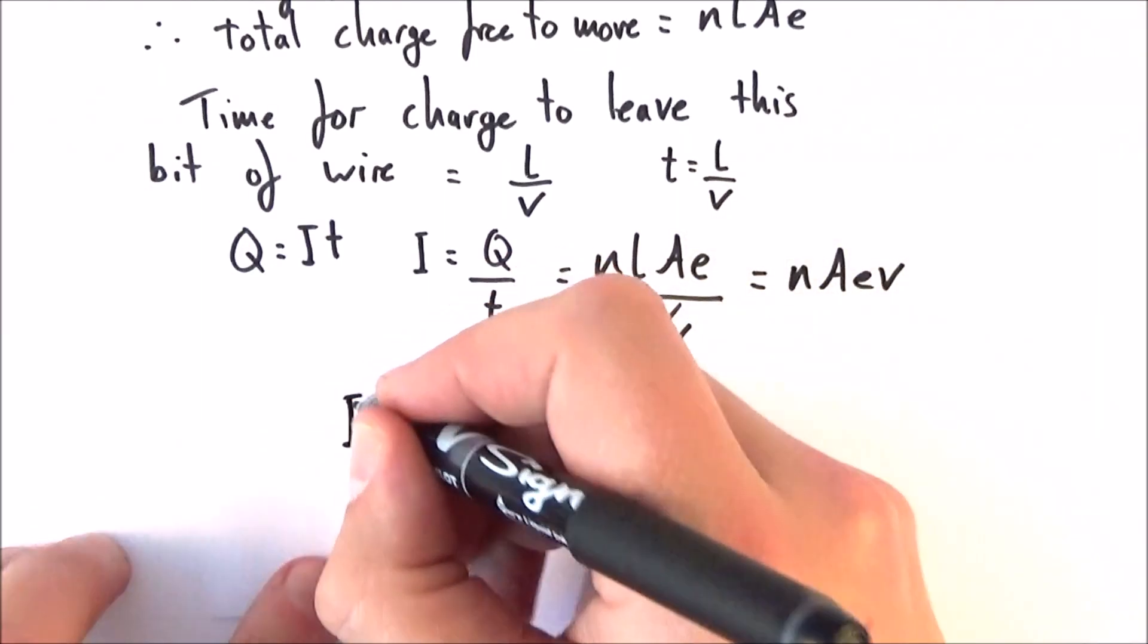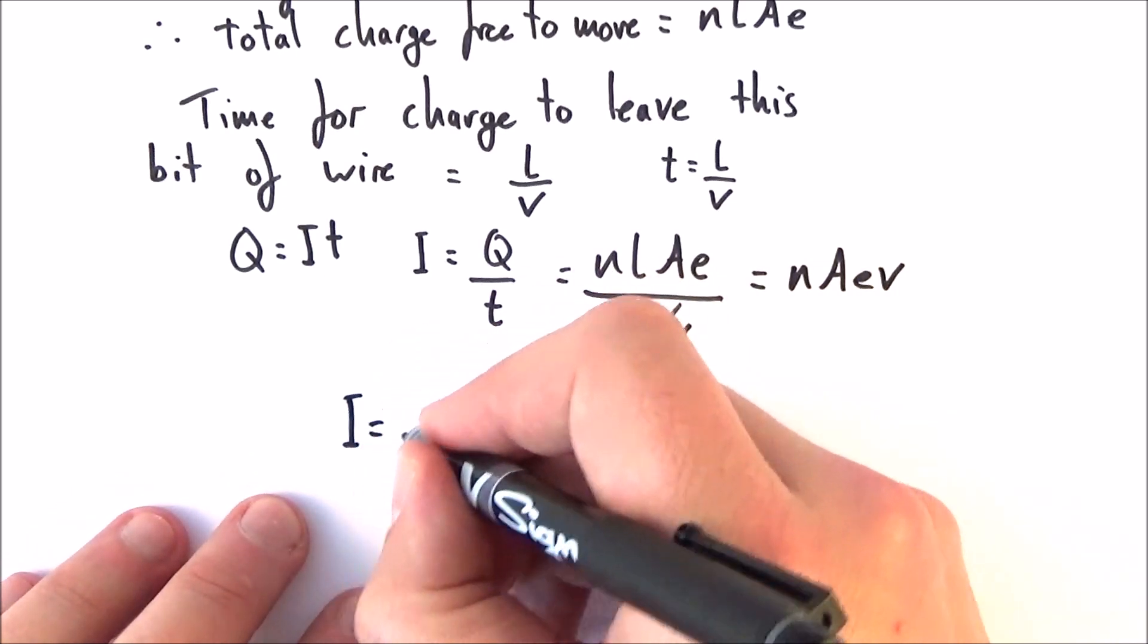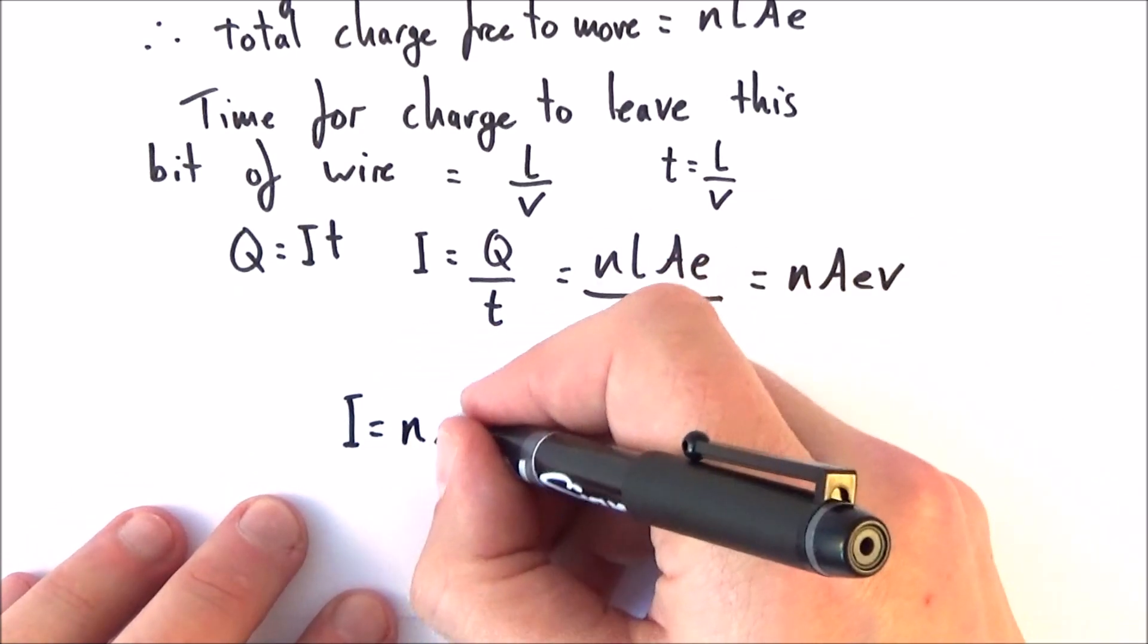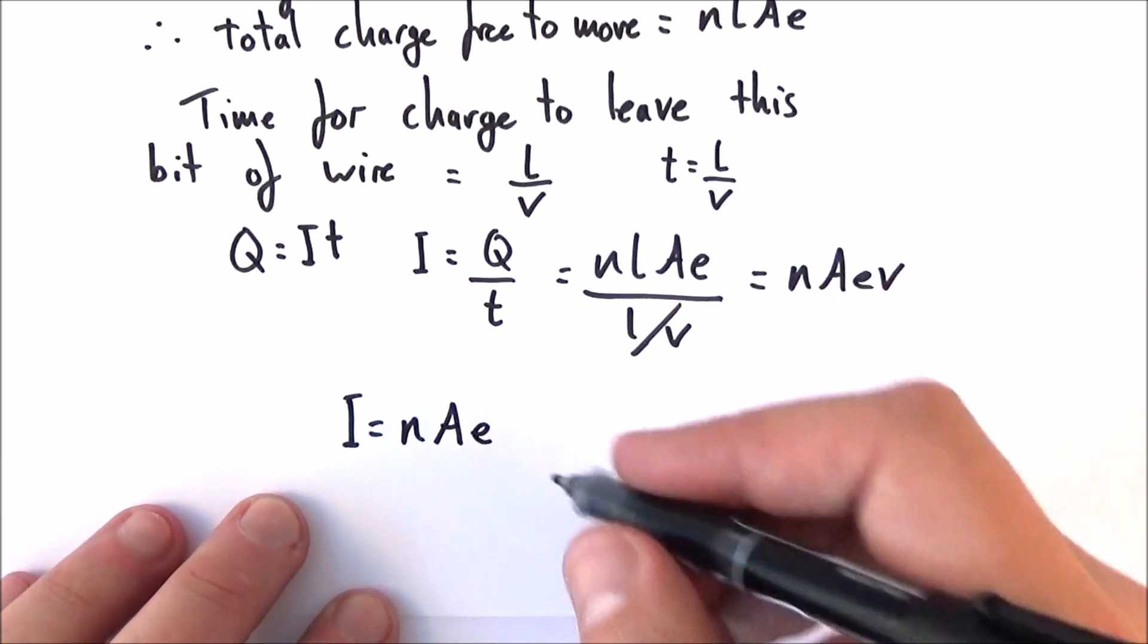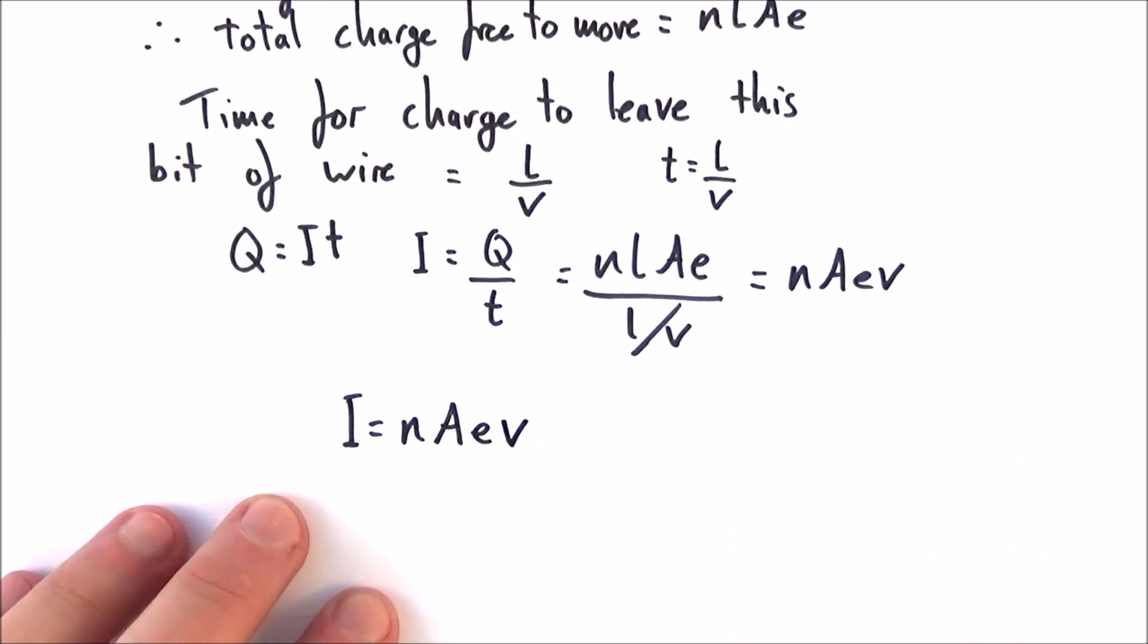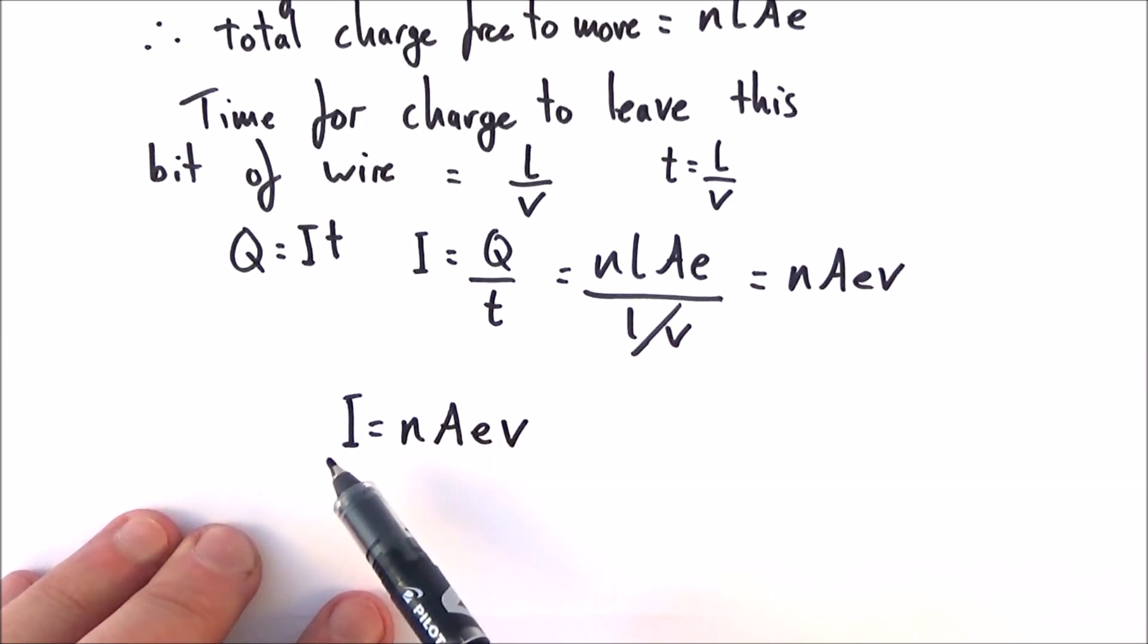Let's write that out once more. We can say that the current in a wire is equal to the number of charged carriers multiplied by the cross-sectional area of that wire, multiplied by the charge in each individual charge carrier, multiplied by the drift velocity. And I often remember this as I=nAVe.